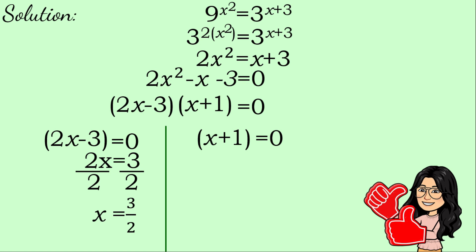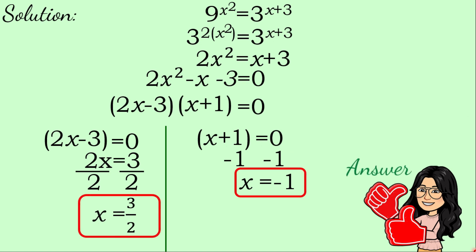You can also write 3 over 2 as 1 and one-half or 1.5. For the other factor, x plus 1 equals 0 — we subtract 1 from both sides to get x equals negative 1. So for this exponential equation we have two answers: x equals 3 over 2 and x equals negative 1.